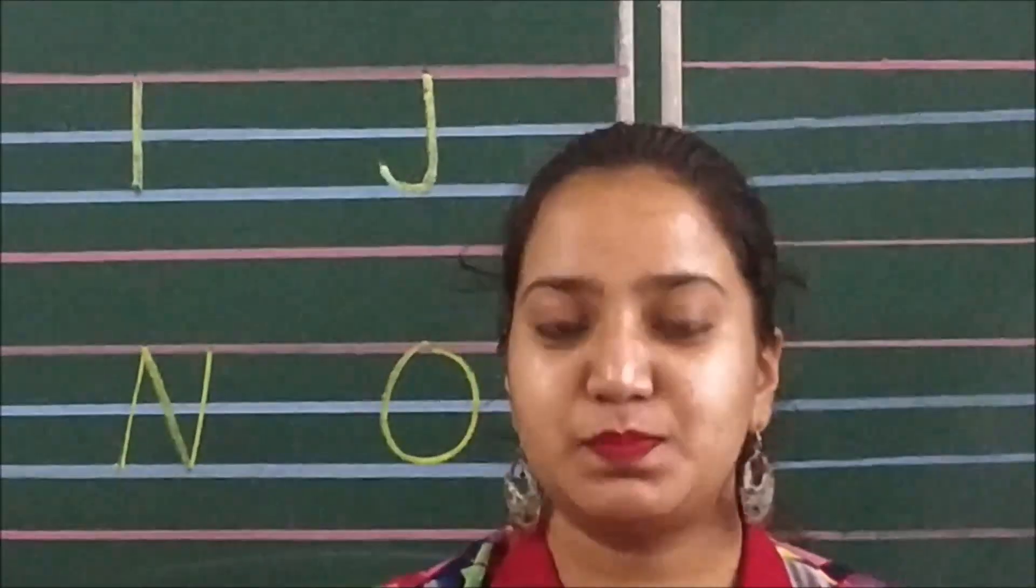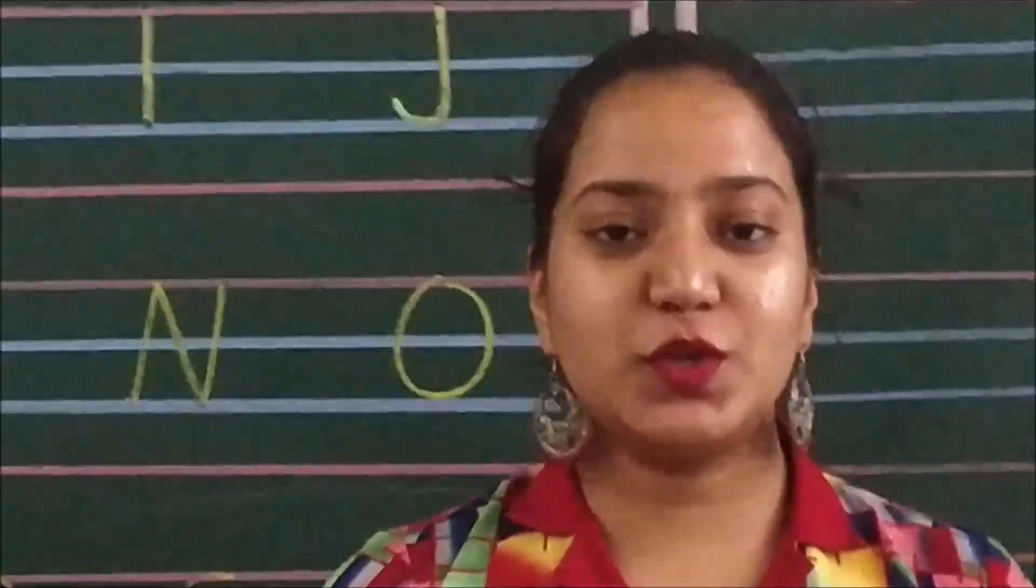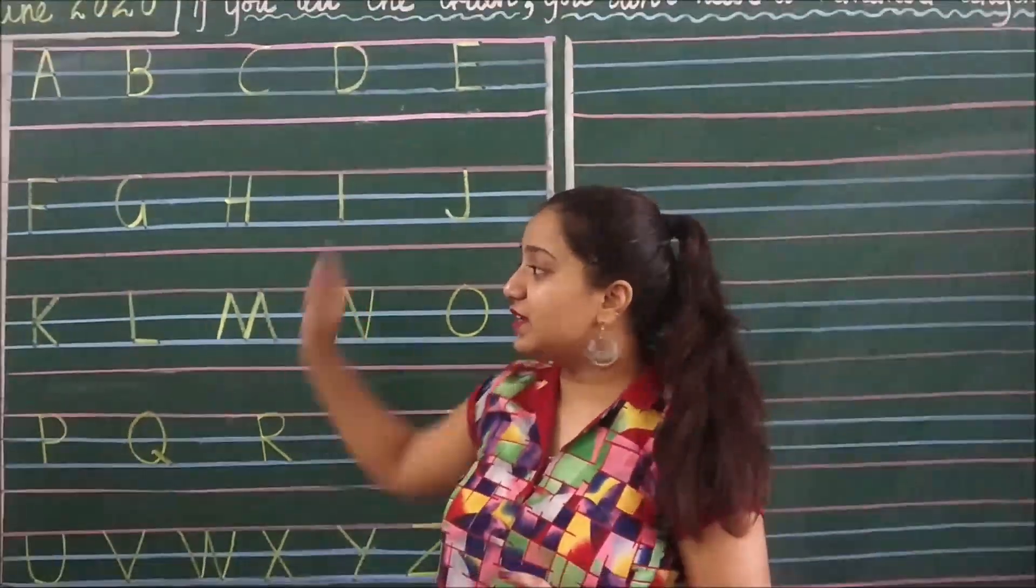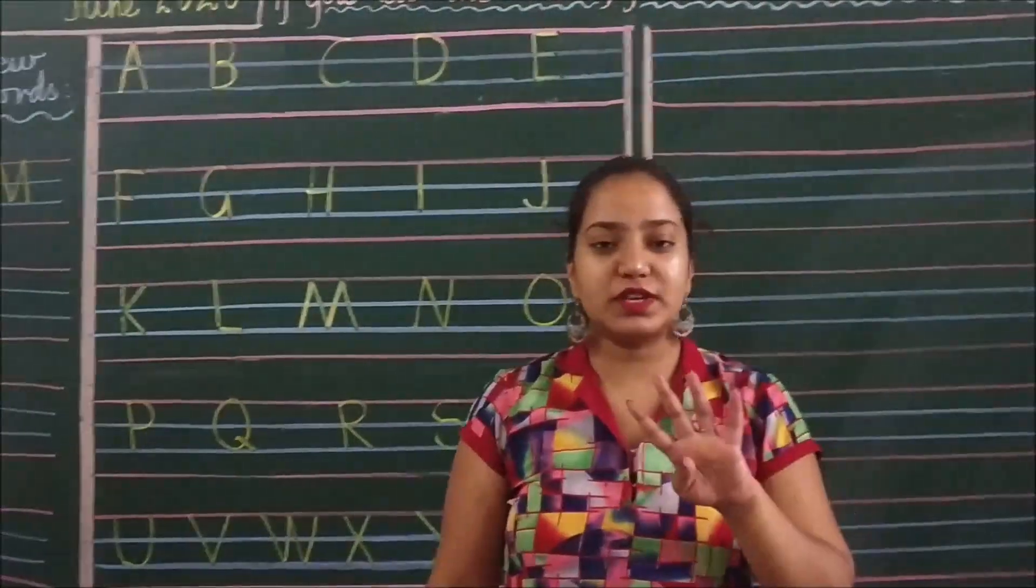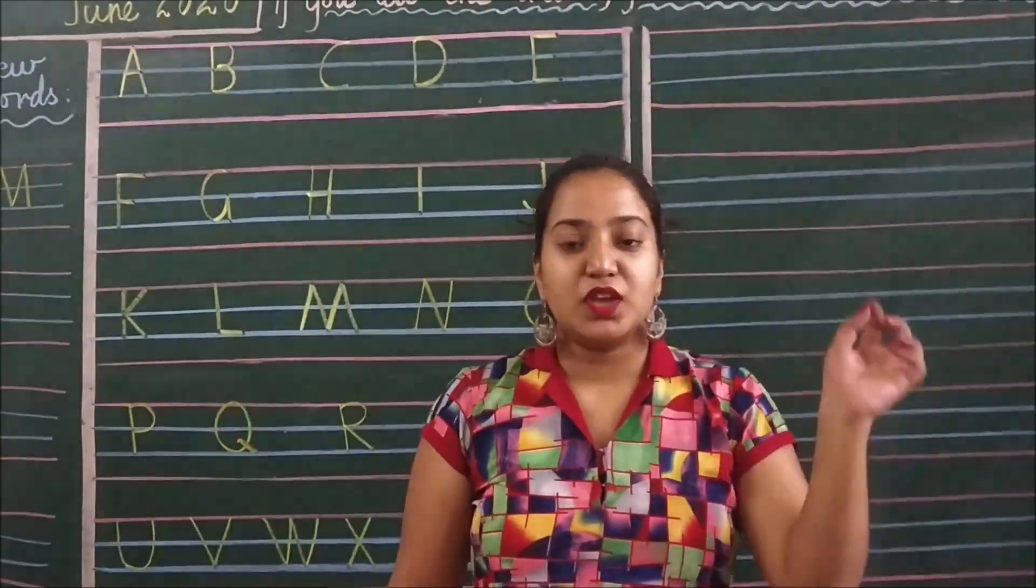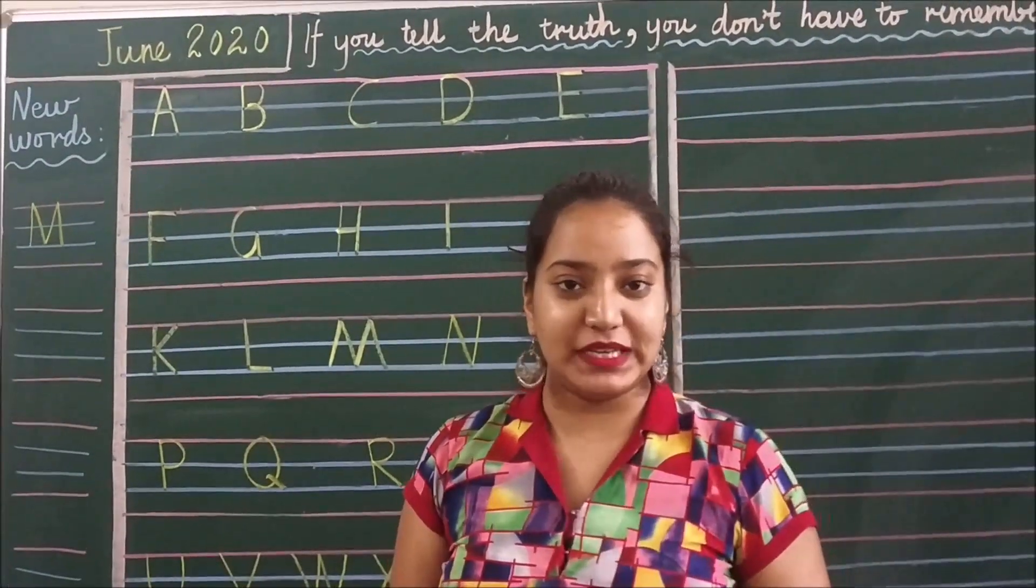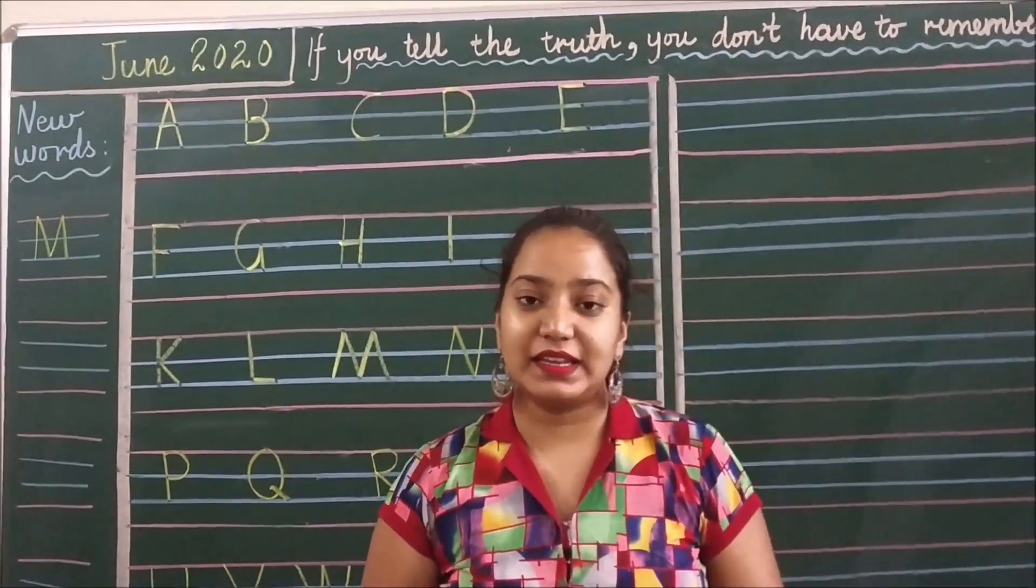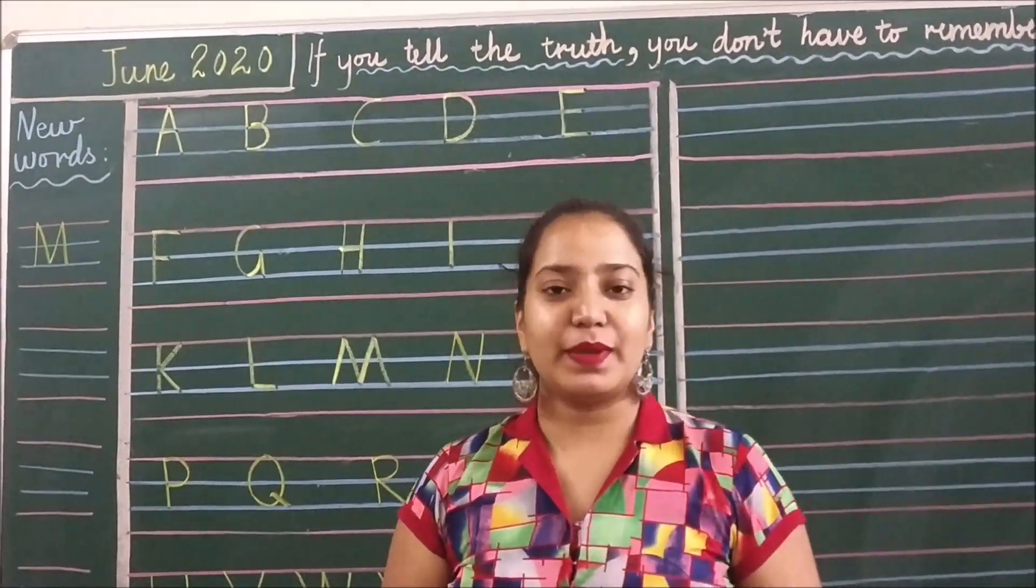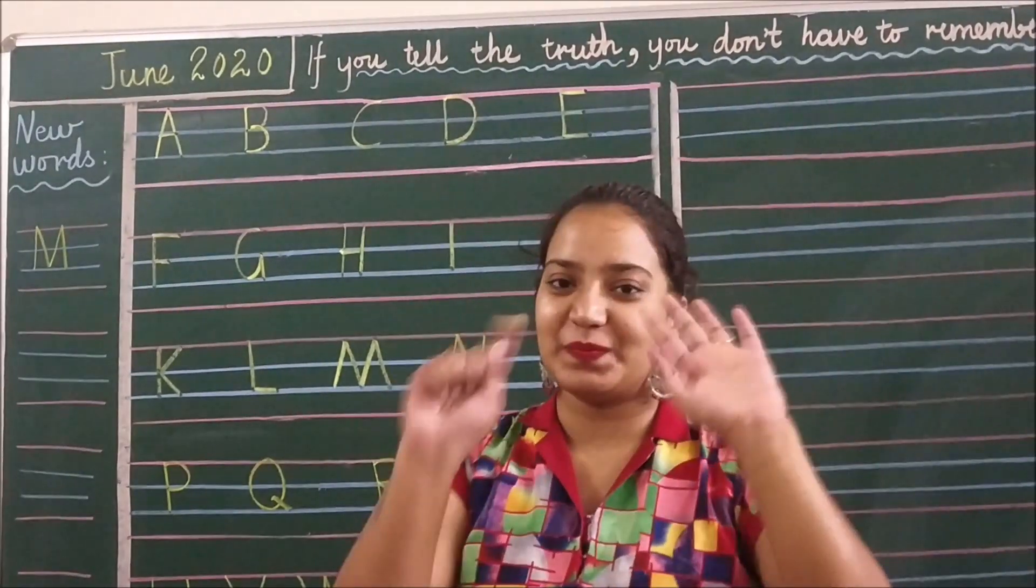Now this is A to Z on the four lines. Now what I expect from you all is that you are supposed to write A to Z at least four times in the brown color book. You must pay attention that you touch the red line and the blue lines properly. You write in a neat and clean handwriting. Please sharpen your pencil before you start writing. Alright, bye bye for now.